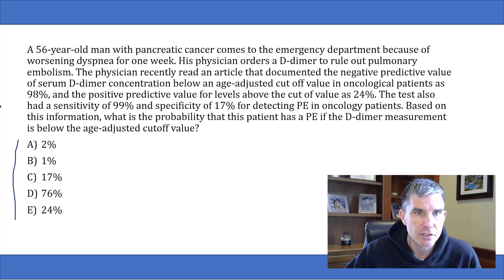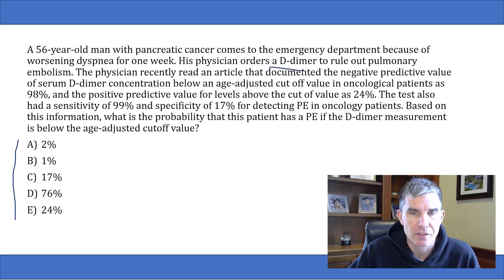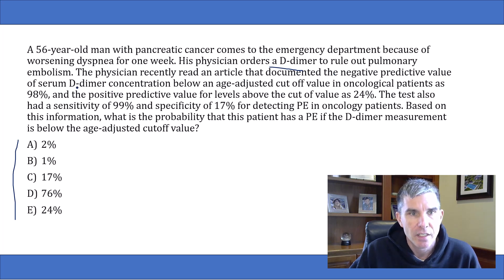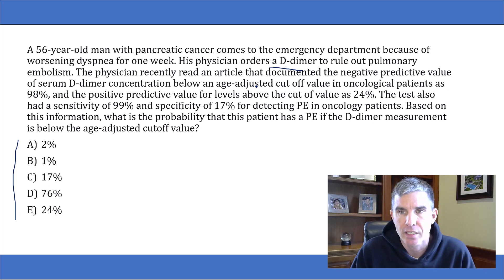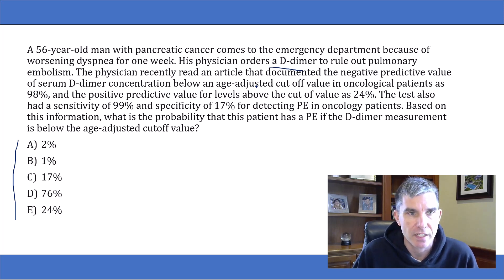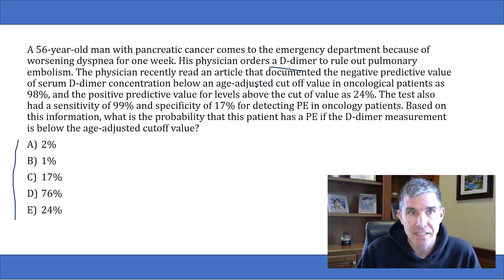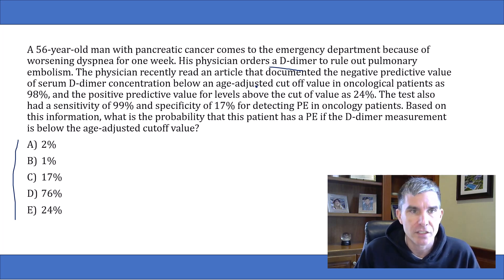Let's take a look at the question stem. The physician orders a D-dimer to rule out pulmonary embolism. Then they give you the world's most confusing sentence: the physician recently read an article that documented the negative predictive value of serum D-dimer concentration below an age-adjusted cutoff value in oncological patients as 98%. That sentence simply says the negative predictive value is 98%. That's all it's saying.